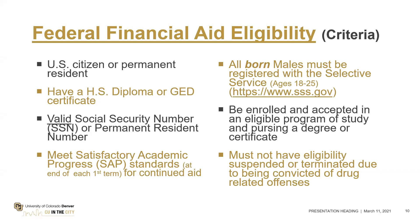All males born male must register for selective service — that's the draft for the military in case of war. We haven't had a draft in a very long time, but all males are required for federal aid purposes to register. At the time you complete the FAFSA, if you're not yet 18, it will ask if you want them to register you when you turn 18 — definitely say yes, so you don't forget. If you don't do it, you will not be able to receive funding and will not receive an award notification.